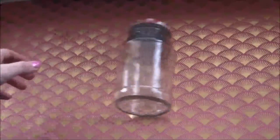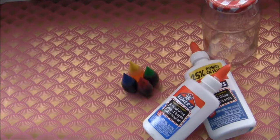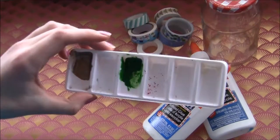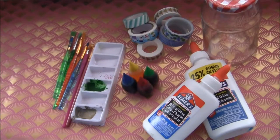To make this rainbow stripe jar, all you will need is an old jam jar, some white glue, some food coloring, some tape, a palette, and some paintbrush.